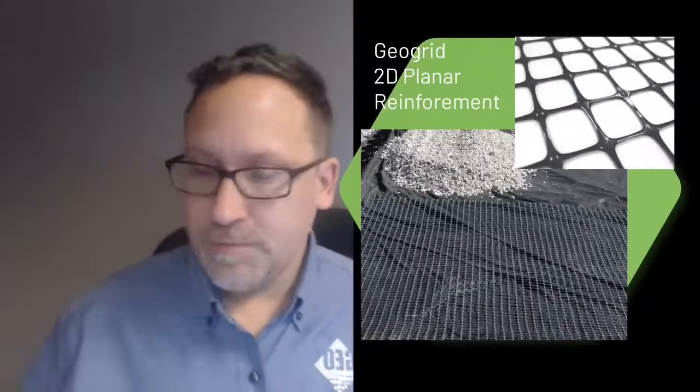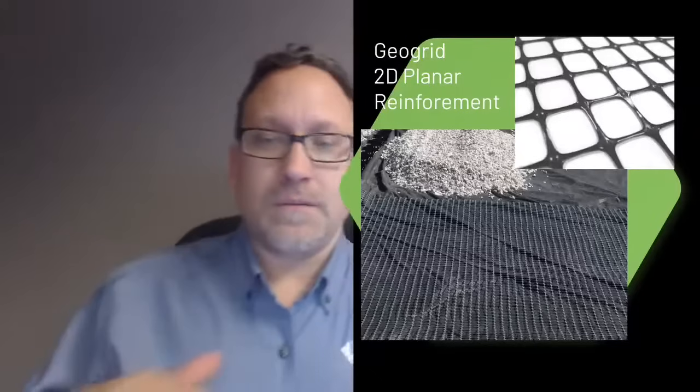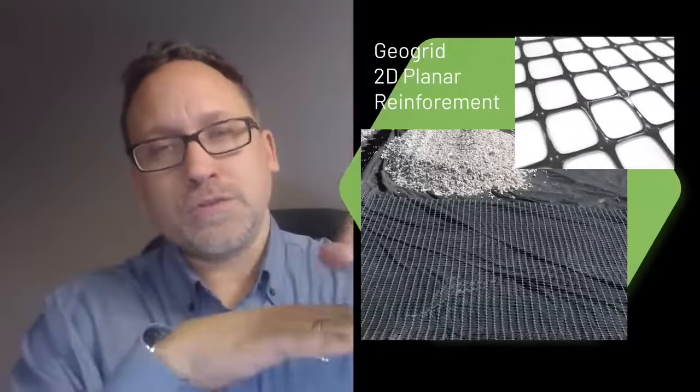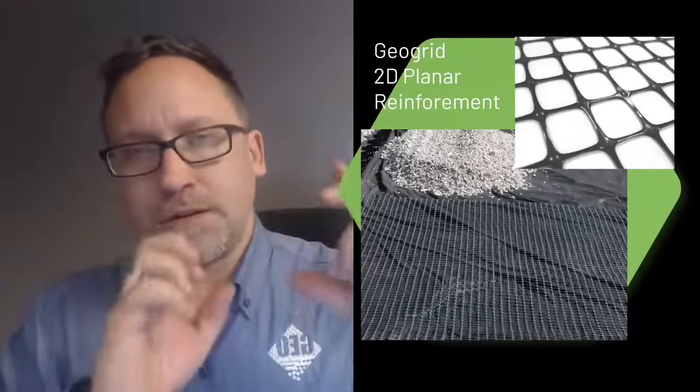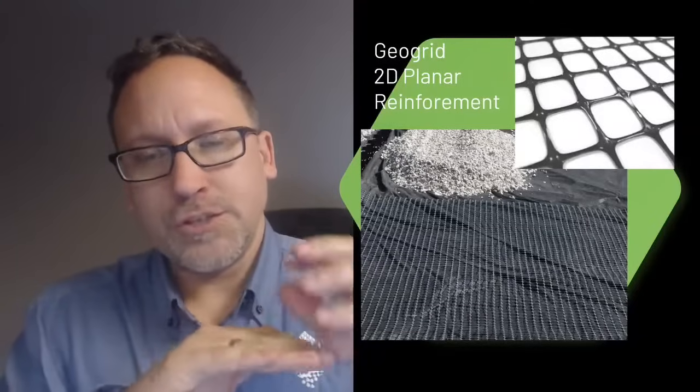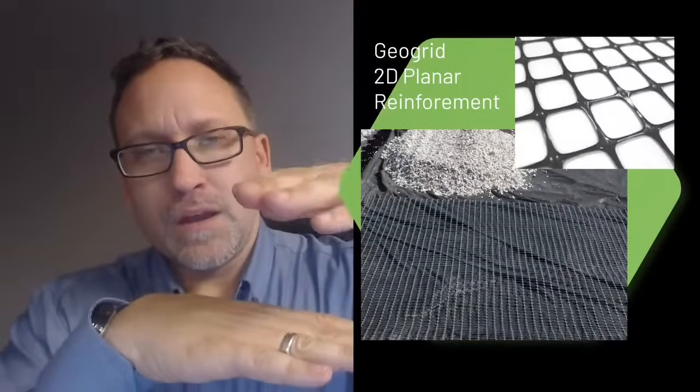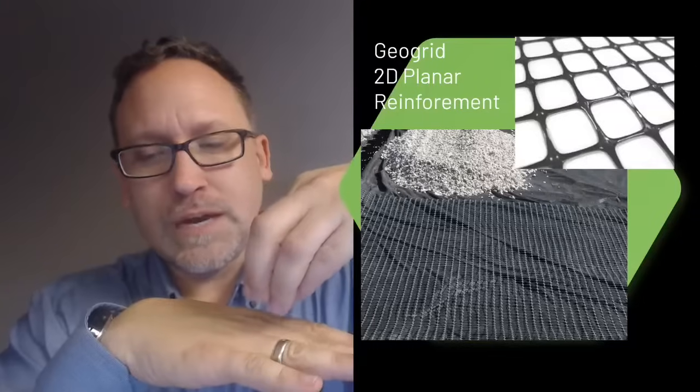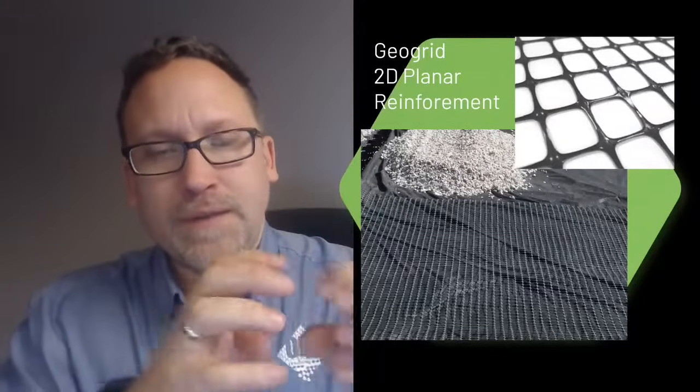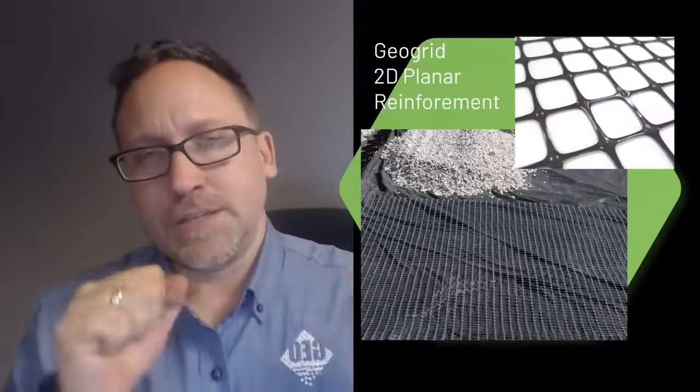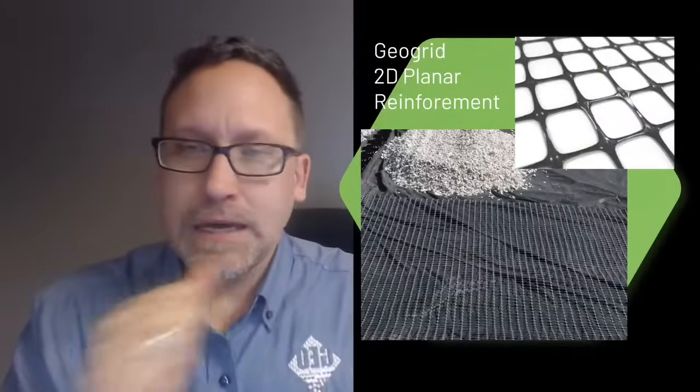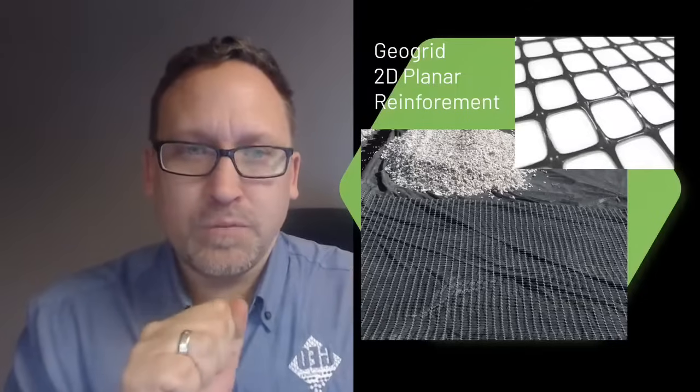Basically they've been used for a long time and they're flat. You put gravel on top of it or some kind of angular stone. As that stone is loaded, those materials start to spread a little bit and that engages - it interlocks with the geogrid and engages the tensile strength in that geogrid and doesn't allow that material to move.